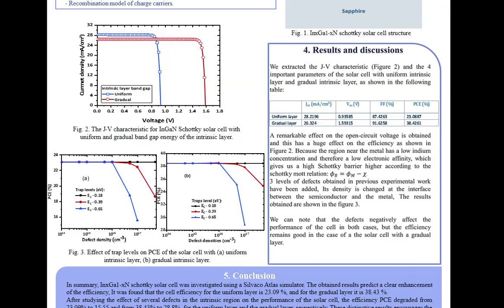After adding defects on the surface near the metal, we notice that the defects negatively affect the performance of the cell in both cases, but the efficiency remains good in the case of the solar cell with gradual layer.